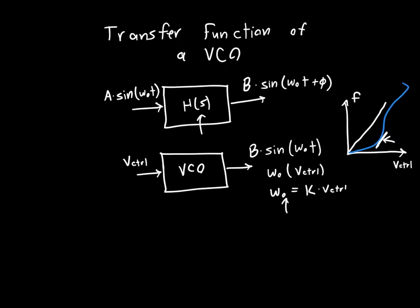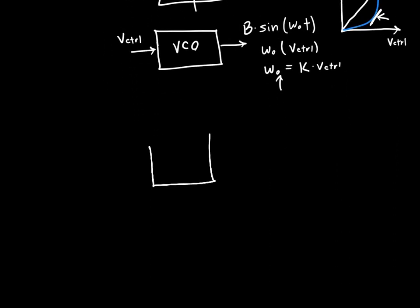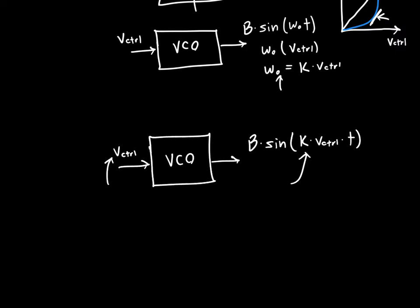But where does that leave us? If we rewrite this entirely, let's just redraw this block. We know if we apply some DC control voltage V control, we'll get some output B times sine of some constant K times V control times t. But this is clearly not a linear system because we're applying a DC input voltage or a sinusoid of frequency zero, and we're getting a sinusoid of a completely different frequency. So this completely breaks our definition for linear system. So how do we get over this? How do we fix this?